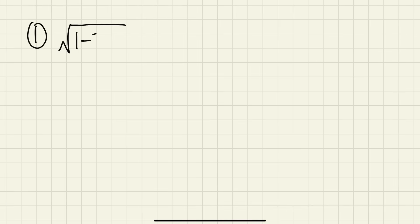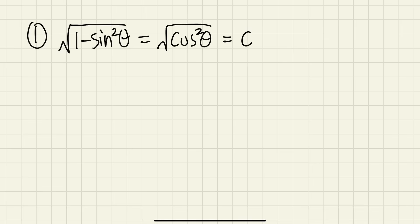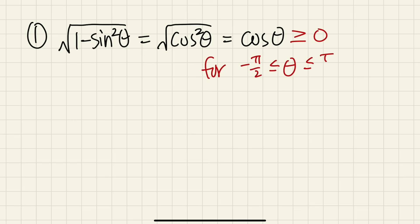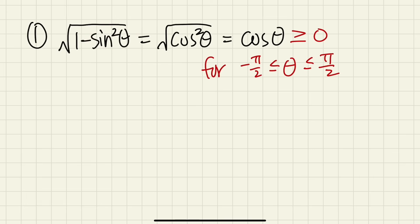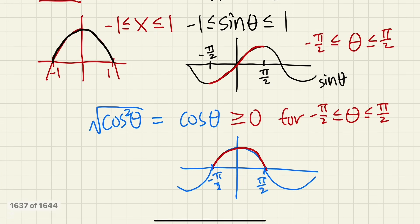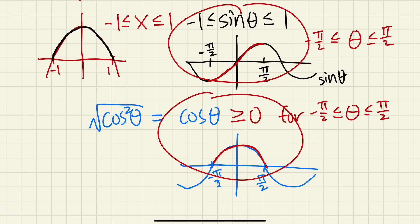Here's a summary. For the sine substitution: square root of cosine squared theta equals cosine theta, which is greater than or equal to zero when theta is restricted to between negative pi over 2 and positive pi over 2. On this interval, you make sure the output is non-negative. You should also make sure the substitution — in this case the sine function — is one-to-one. Note that the output, cosine, does not have to be one-to-one, but the substitution function, sine, does have to be one-to-one.